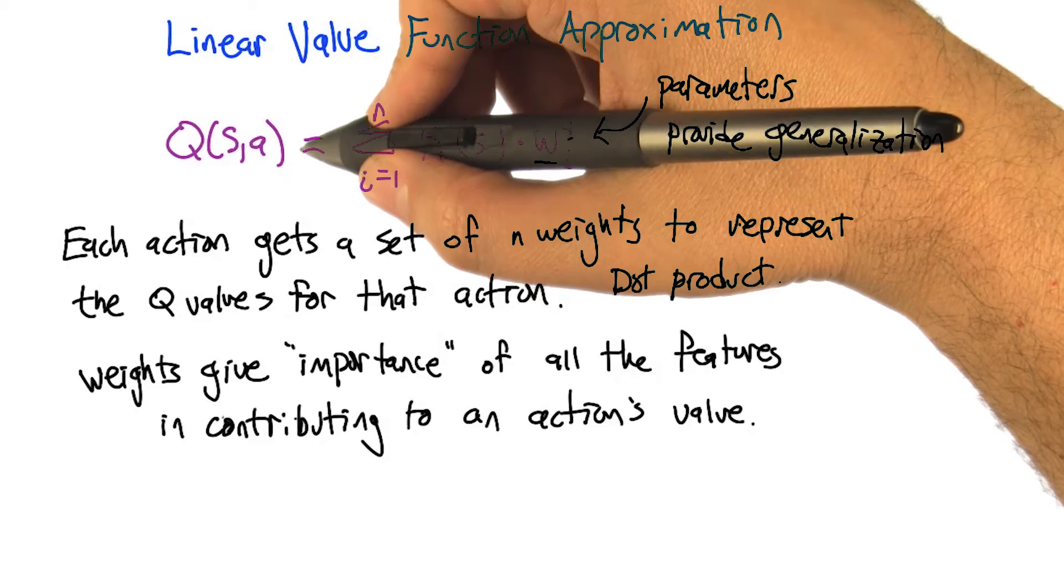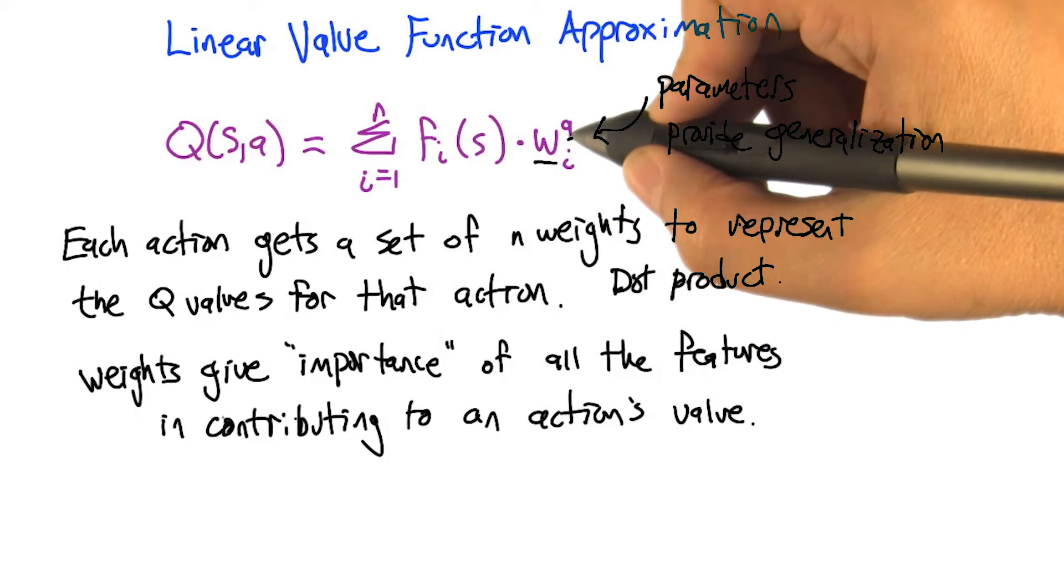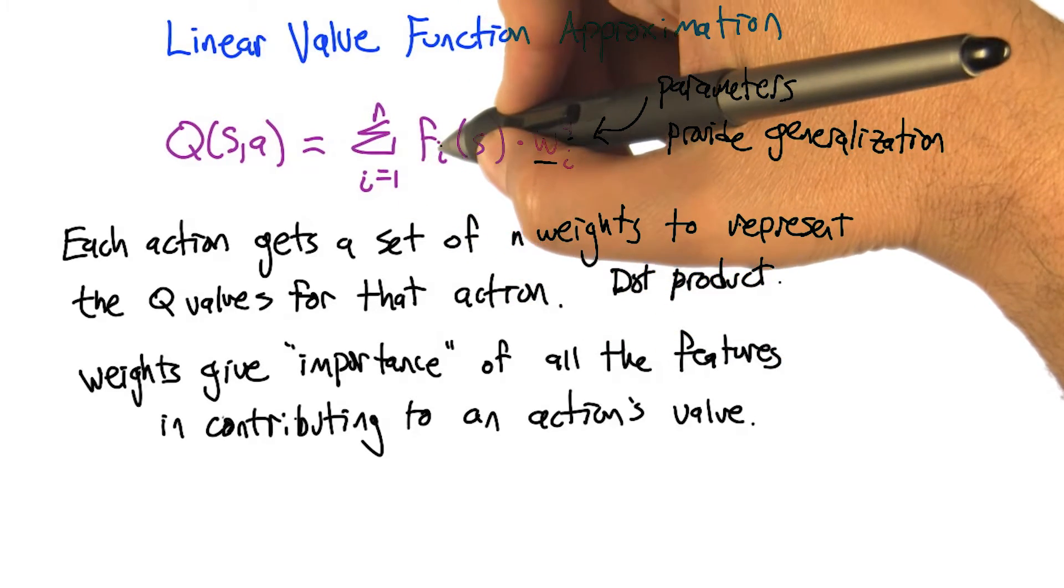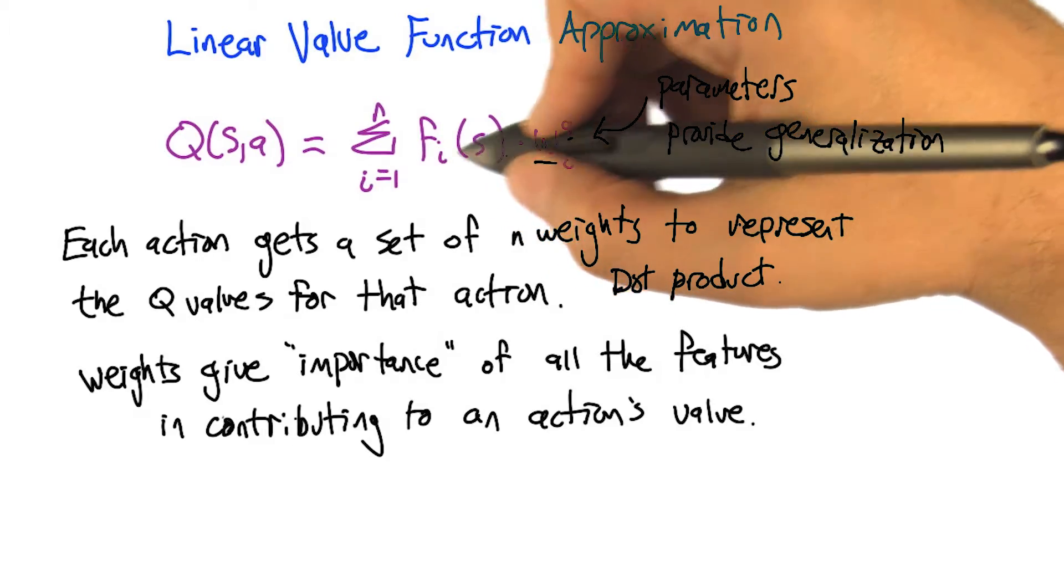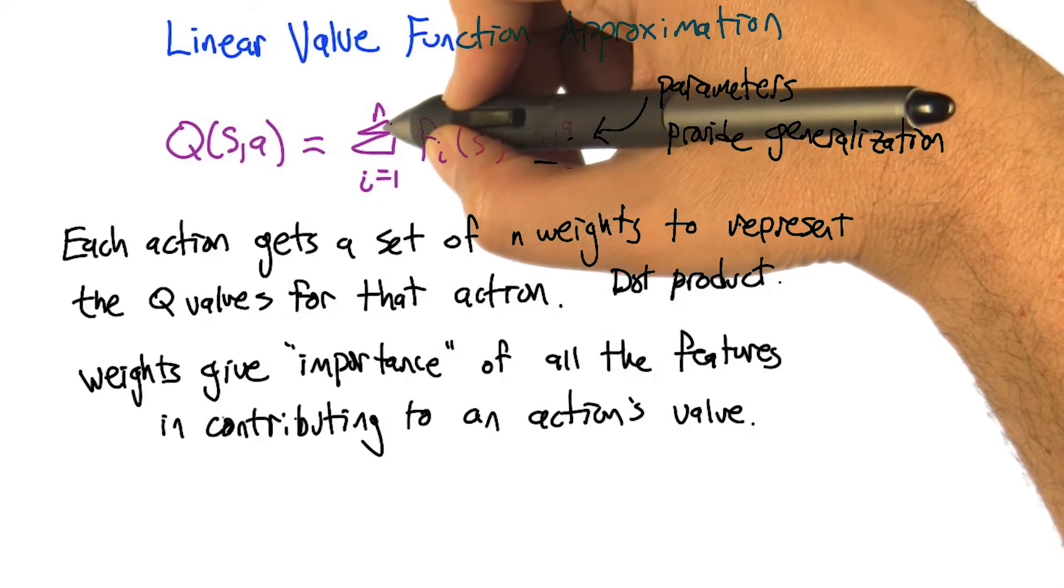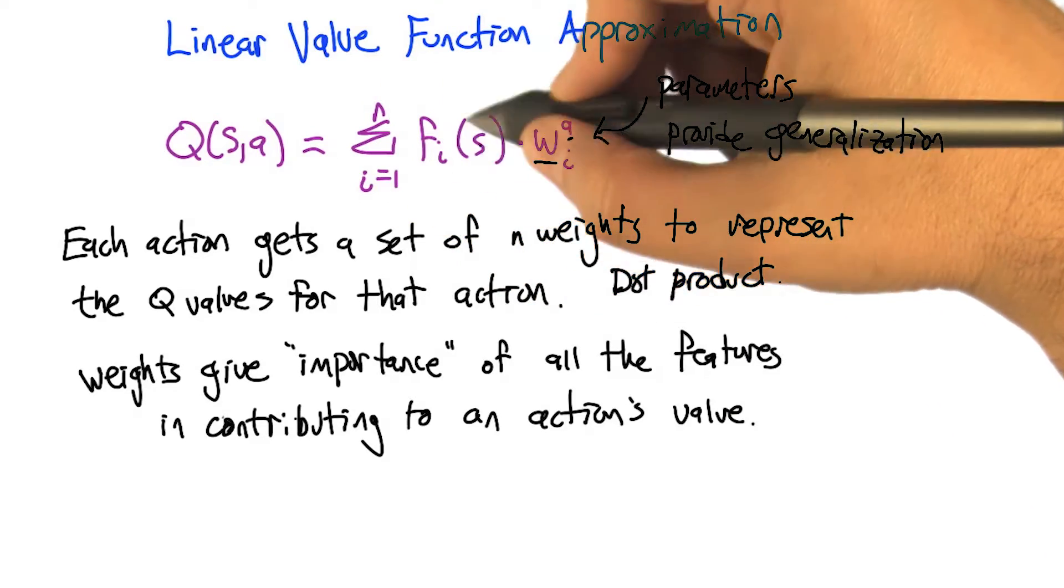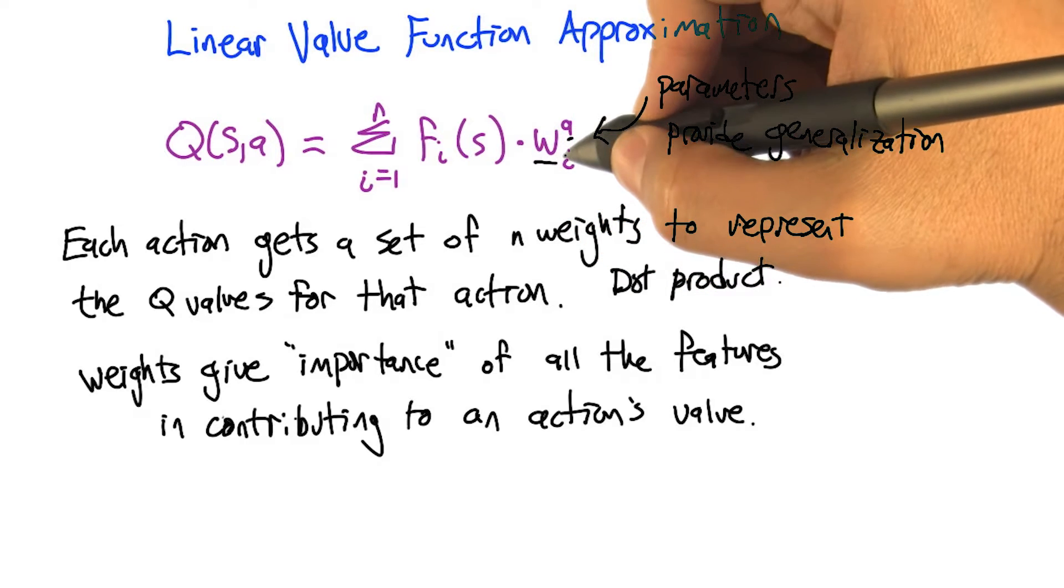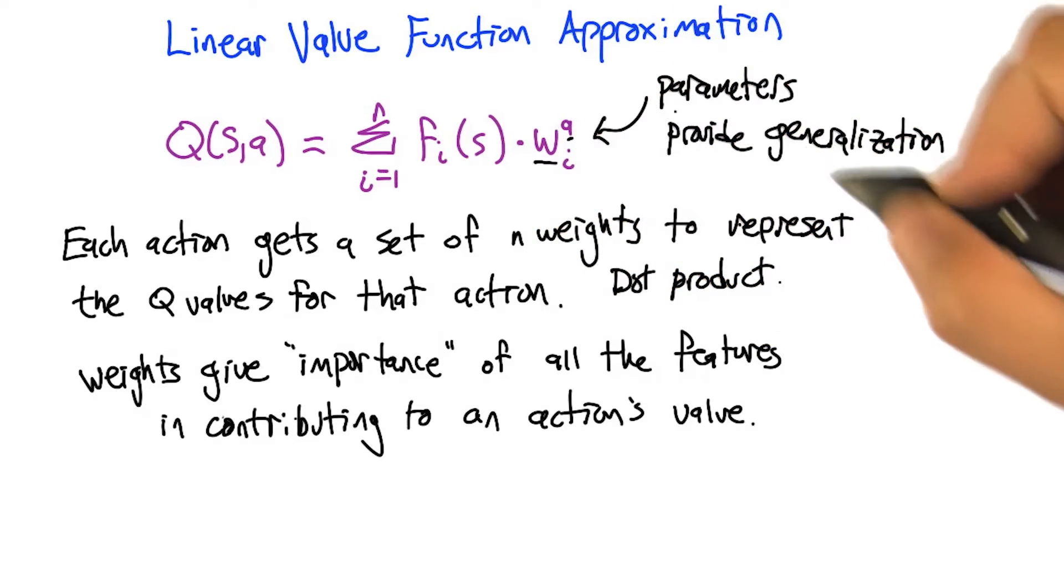So this is how the Q function can be represented if we're doing things linearly. We have this set of weights, w^a_i, and we have a set of features, or at least this function f that maps states to particular feature values. Let's say we've got n different features. If we're representing things linearly, what we're doing is summing over all the features for the current state, the value of that feature times the weight being used to represent the Q function for this action. Essentially, take the dot product between this feature vector and the weight vector.